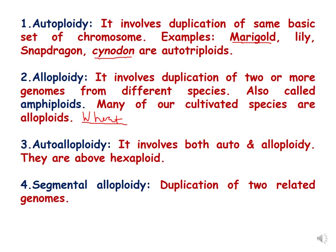Autoploids involve duplication of the same basic set of chromosomes. The term is self-explanatory — auto means duplication of the same genome. Examples of autoploids include marigold, lilies, snapdragons, and similar plants. You can see that the size of the flowers is very large because of the extra set of chromosomes.